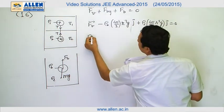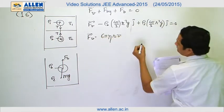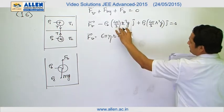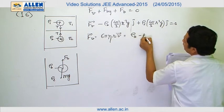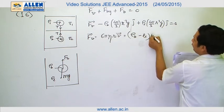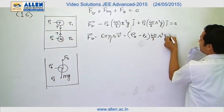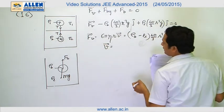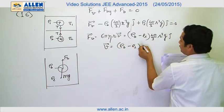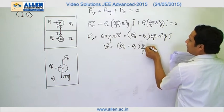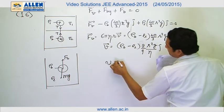So from here we can say that viscous force, which is also equal to 6 pi eta Rv, equals rho B minus rho L times 4 pi by 3 R cubed times G. So we will get terminal velocity V equals rho B minus rho L times 2 divided by 9 R squared G divided by eta j cap.